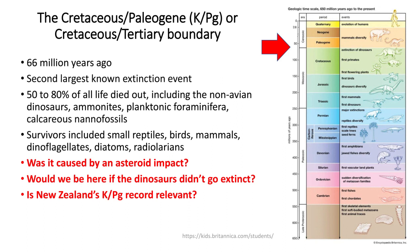66 million years ago saw the second largest extinction event known. There's still debate about how many species died — somewhere between 50 to 80% of life died out, including the non-avian dinosaurs, the ammonites, planktonic foraminifera, and calcareous nanofossils. Survivors included small reptiles, birds, and mammals, as well as many microscopic fossils — dinoflagellates, diatoms, and radiolarians. Most species of those microscopic groups survived the KT boundary.